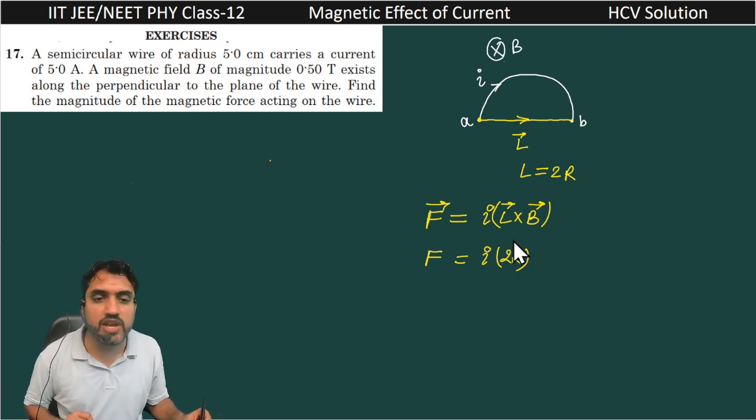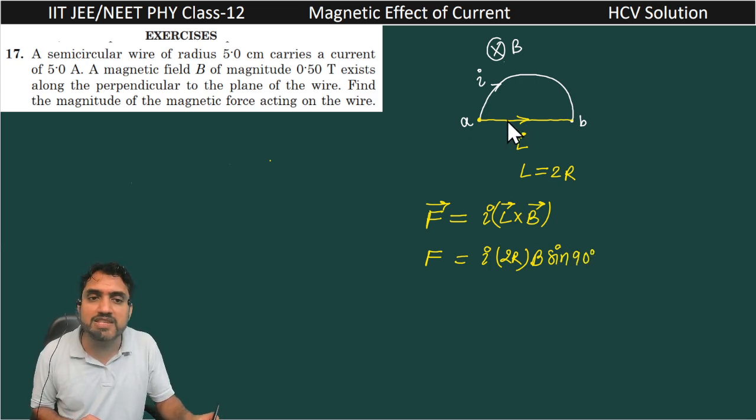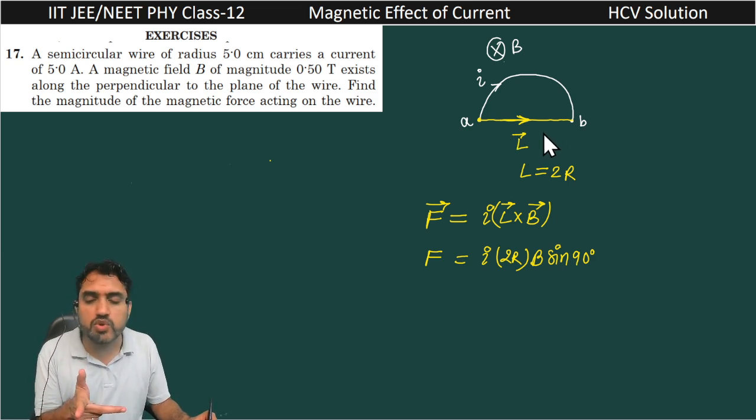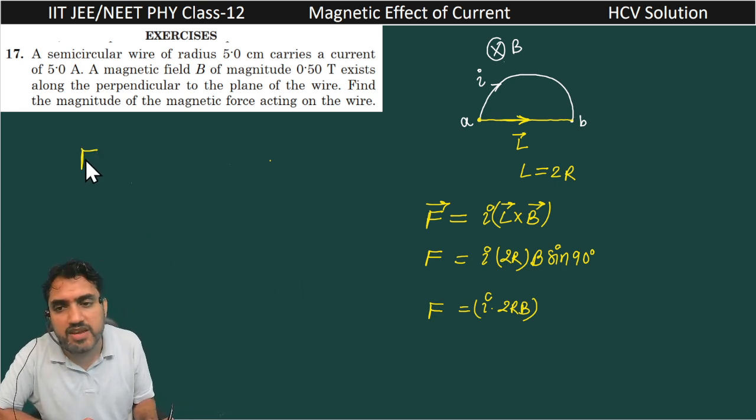So the effective length here, or the shortest length, is 2R and magnetic field B, and the angle is 90 degrees. What is the angle between this shortest length L vector and the magnetic field? This magnetic field is into the plane of the paper and the length is in the horizontal direction, so both are making angle 90 degrees. So this F is equal to I into 2R into B.